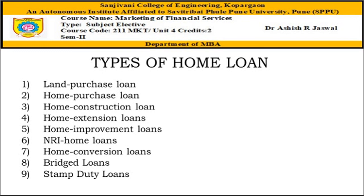The fourth type of loan is a home extension loan. This loan is generally taken up by individuals who want to expand or extend their existing house. A few banks differentiate this loan based on the purpose of expansion of the current house. Most banks include this type of loan as part of their home improvement loan.